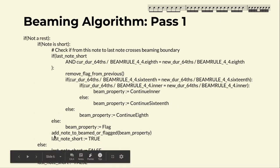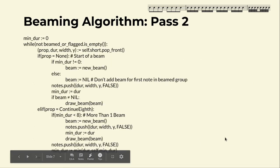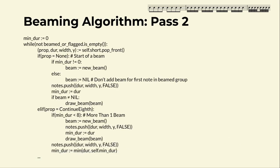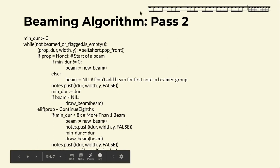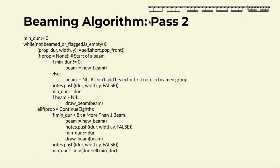We add that beam property to a list of notes. On our second pass, we go through that list and have to figure out what the minimum note duration is in the measure, because anything that has a sixteenth note in it will use a different grouping. We have to look for the minimum duration and base our beaming patterns on that. Then we go through our list of beamed or flagged notes, as long as it's not empty, and keep taking items out of it. It's a double-ended queue so we can add stuff back to it.